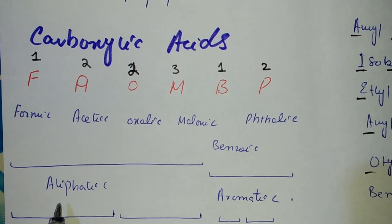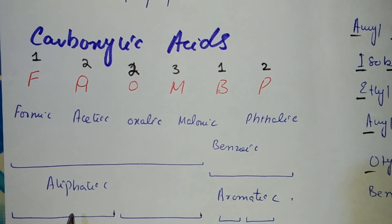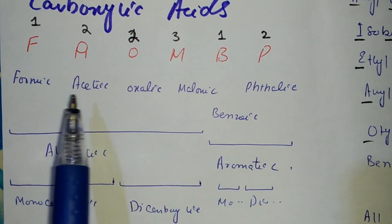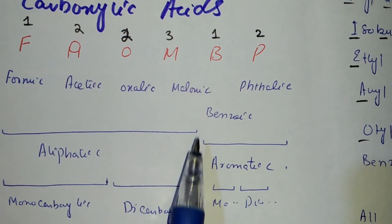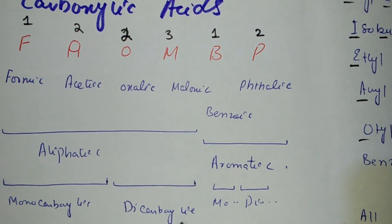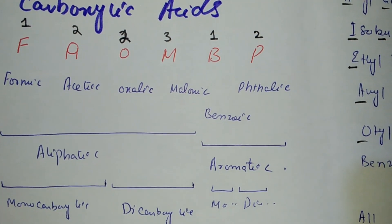In this section, we have Monocarboxylic Acids and Dicarboxylic Acids. In the case of Aliphatic Acids, we have Formic Acid and Acetic Acid as Monocarboxylic Acids, and Oxalic and Malonic Acid as Dicarboxylic Acids.